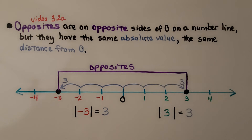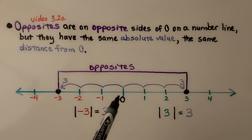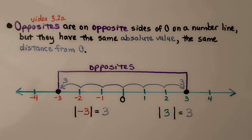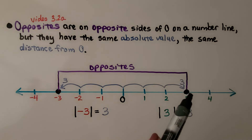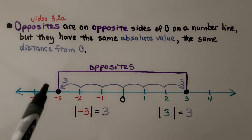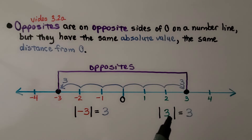We just learned about opposites in the previous video, 3.2a. Opposites are on opposite sides of zero on a number line, but they have the same absolute value — the same distance from zero. Here's negative three; its opposite is positive three. They're both three jumps from zero. The absolute value of negative three is three, and the absolute value of positive three is three.